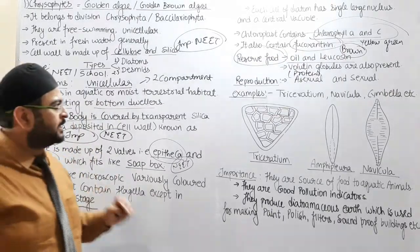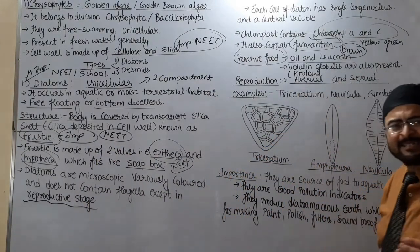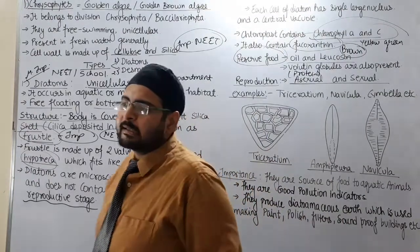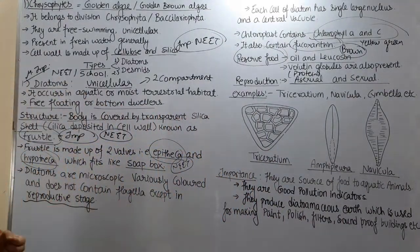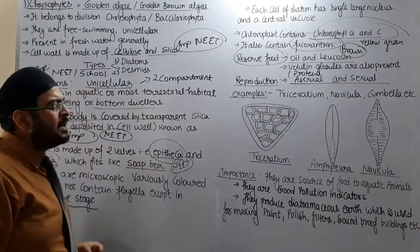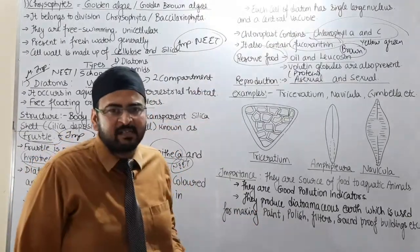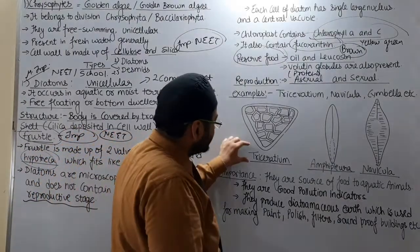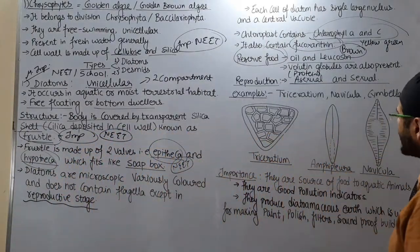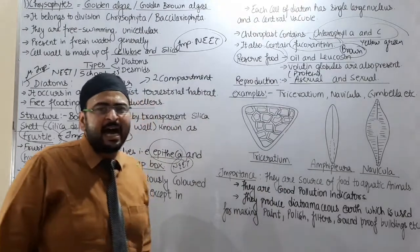Diatoms show both types of reproduction — that is Asexual and Sexual. Asexual reproduction is generally by fission. Coming to its examples: Triceratium, Navicula, Cymbella, and Amphipleura. We have also made their diagrams — Triceratium, Amphipleura, and Navicula — and they appear to be divided into two compartments, hence we call them Diatoms.